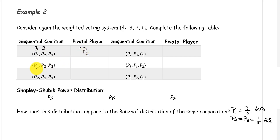The sequential coalition with players 1, 3, and 2: player 1 has a weight of 3, player 3 has a weight of 1, and now we have met our quota. So player 3 is our pivotal player.